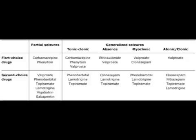For myoclonic seizures, the first line is valproate and clonazepam, and the second choice is phenobarbital, lamotrigine, or topiramate. Note that lamotrigine and topiramate often appear together as second-choice drugs for generalized seizures. For atonic seizures, clonazepam, nitrazepam, topiramate, and lamotrigine can be used.